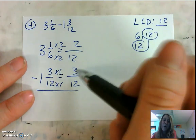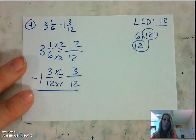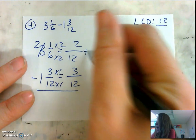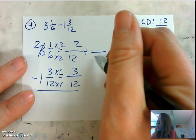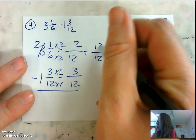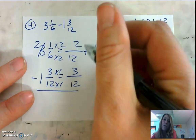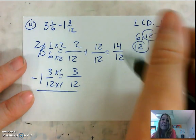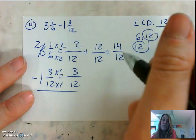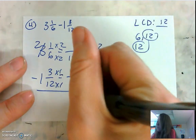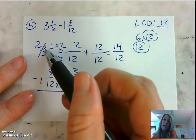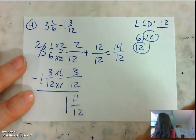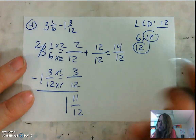Now I can subtract 2 twelfths minus 3 twelfths — no, I can't. 2 is smaller than 3, so we say stop, regroup. We're going to regroup that 3, take a whole out, turn it into 2. We're going to add our whole over here with a denominator of 12, so our numerator must also be 12 in order to keep it one whole. 2 twelfths plus 12 twelfths gives me a total of 14 twelfths. I can now say 14 twelfths minus 3 twelfths equals 11 twelfths. I only have 2 wholes because I did regroup one, so 2 minus 1 is 1. That gives me an answer of 1 and 11 twelfths.